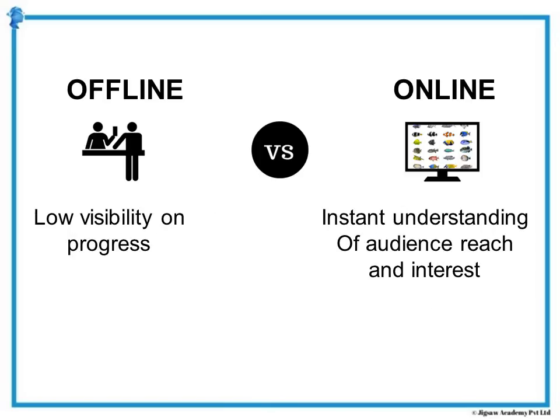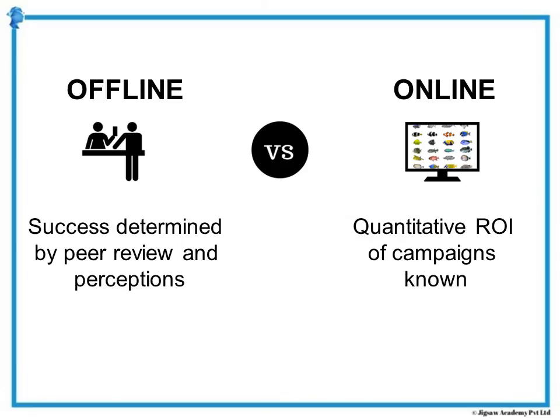Another difference between these two worlds is visibility into progress: for offline campaigns, it is very low. Unless we are willing to wait for a few months, it's difficult to understand whether a campaign is successful. Whereas in the online world, on a daily basis, I would know whether prospects are responding to campaigns in terms of clicks on ads, website visits by age, gender, and demography, and engagement on content pages. The online world offers real-time controls over targeting, messaging, and campaign management that help measure campaign return on investment on a regular basis. This critical differentiator makes online much more ROI-oriented, as opposed to the perception-oriented offline world.